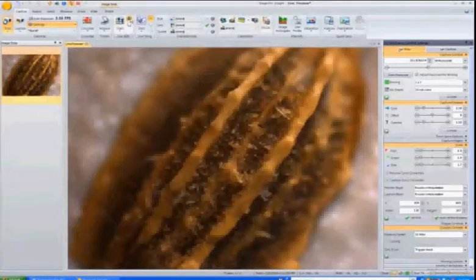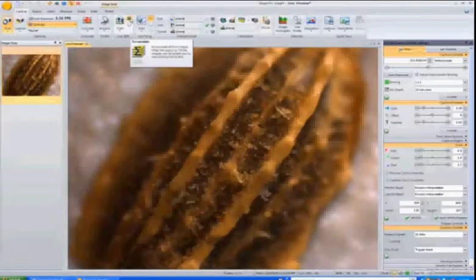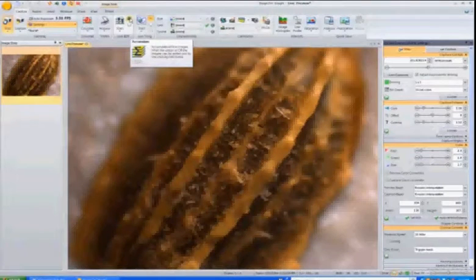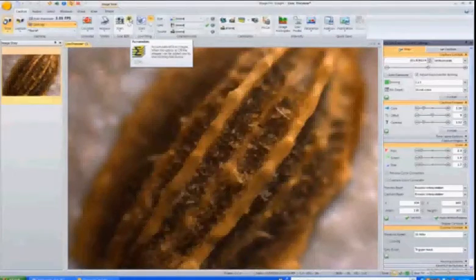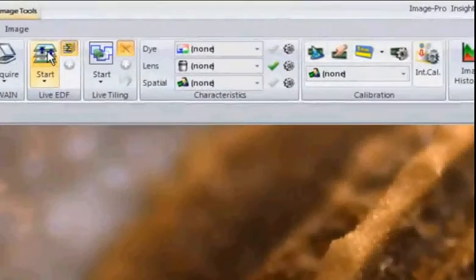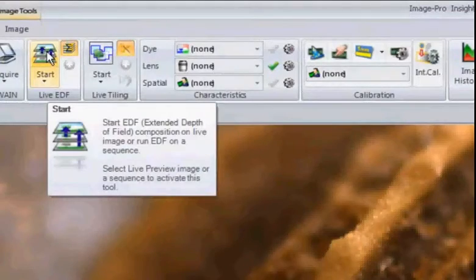If you notice, this box is checked, which is going to, on the fly, accumulate the images and choose the portions of each image that's in the best focus. By the time we land at the end, we'll have an entire image fully in focus.